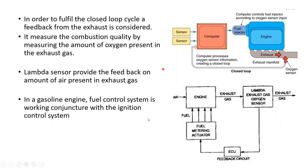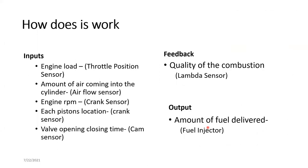That feedback signal is considered before implementing the fuel injection time. The first image is the previous one, but the lower image gives you the proper names. The feedback circuit is shown as the ECU fuel metering actuator — the fuel metering actuator is the fuel injector in this case. Engine load — to measure engine load, we consider a throttle positioning sensor, which gives the engine an idea of how much power we are requesting.